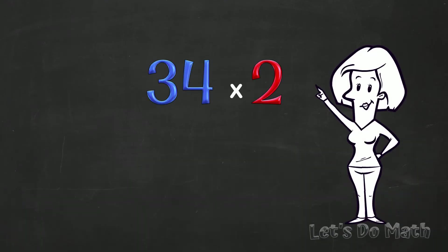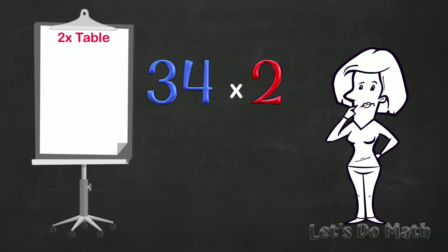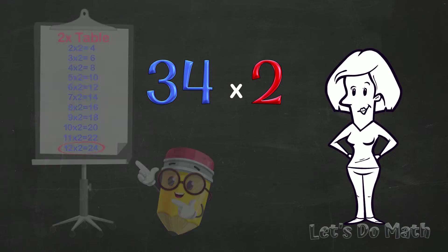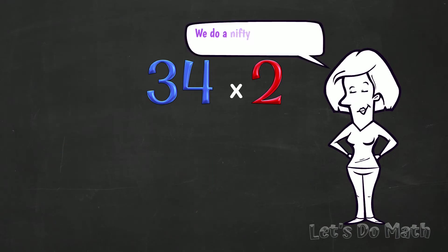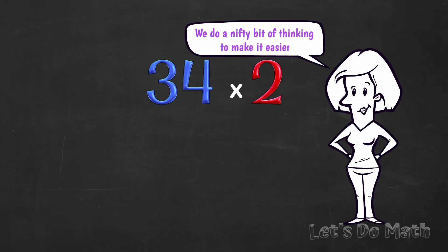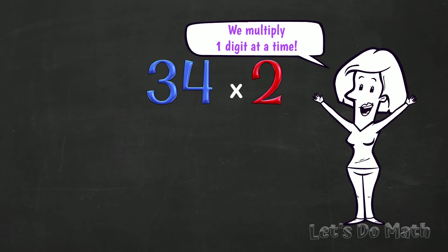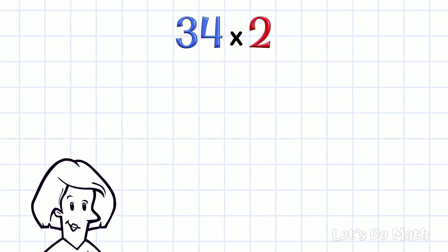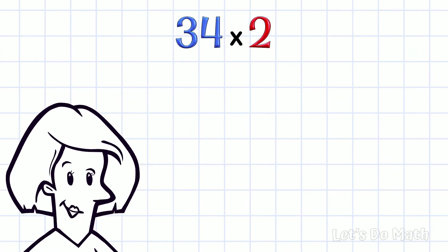Let's kick off with this: 34 × 2. We learn our tables up to 12 times a number. To get to 34 × 2, we do a nifty bit of thinking to make it easier. We multiply one digit at a time! Make sure to use squared paper because that will help. We set it out like this.